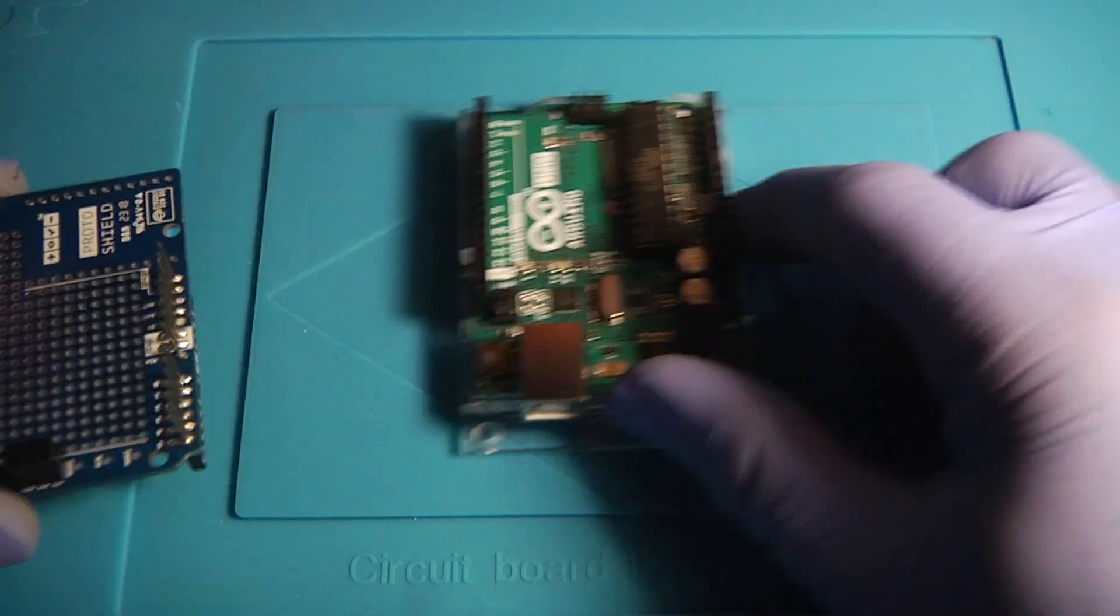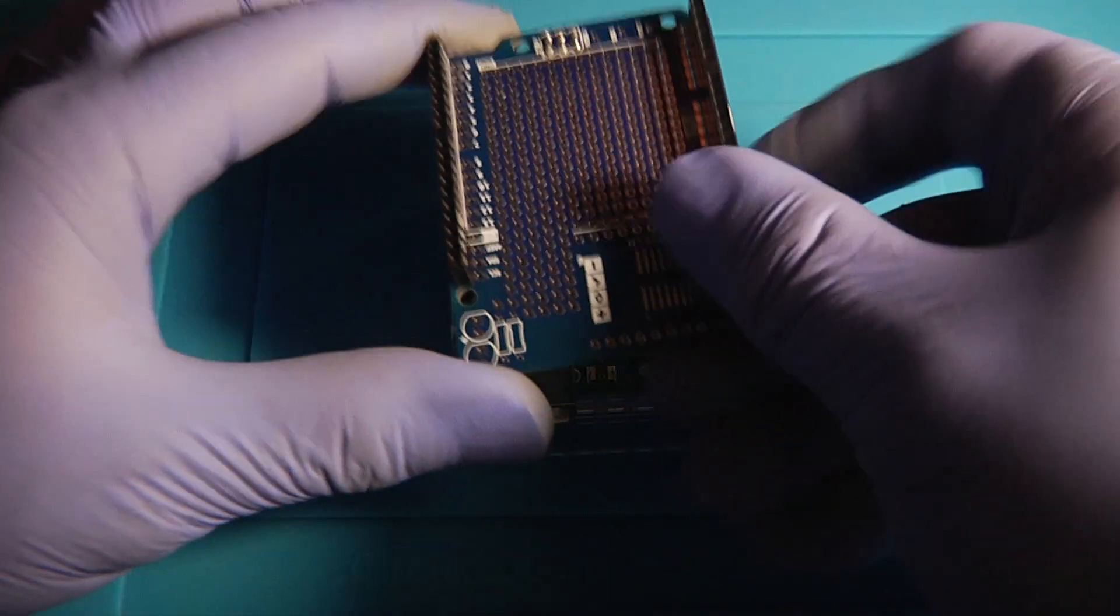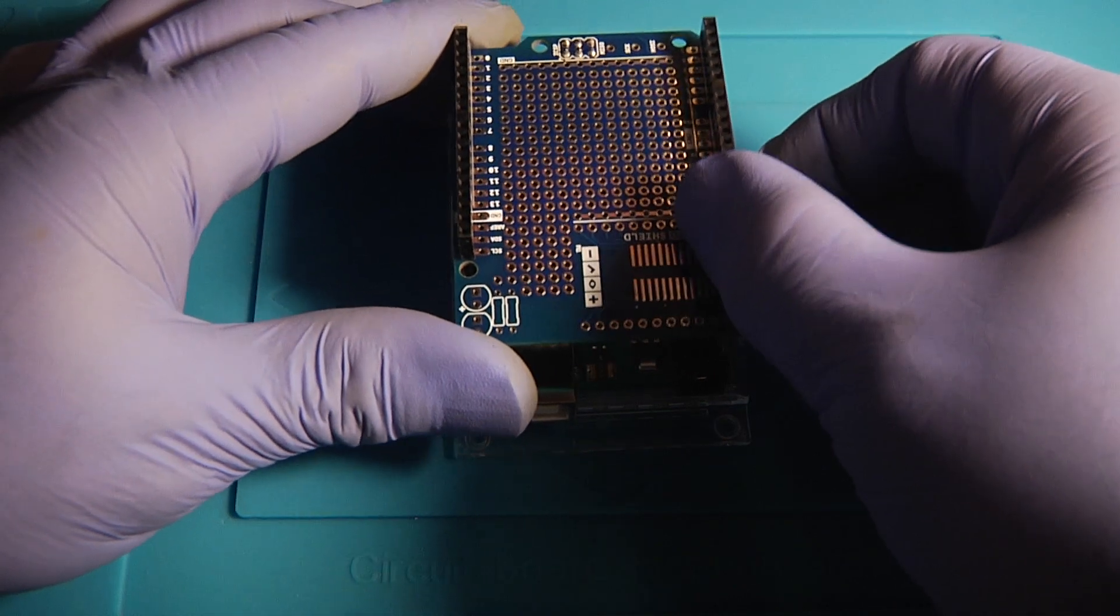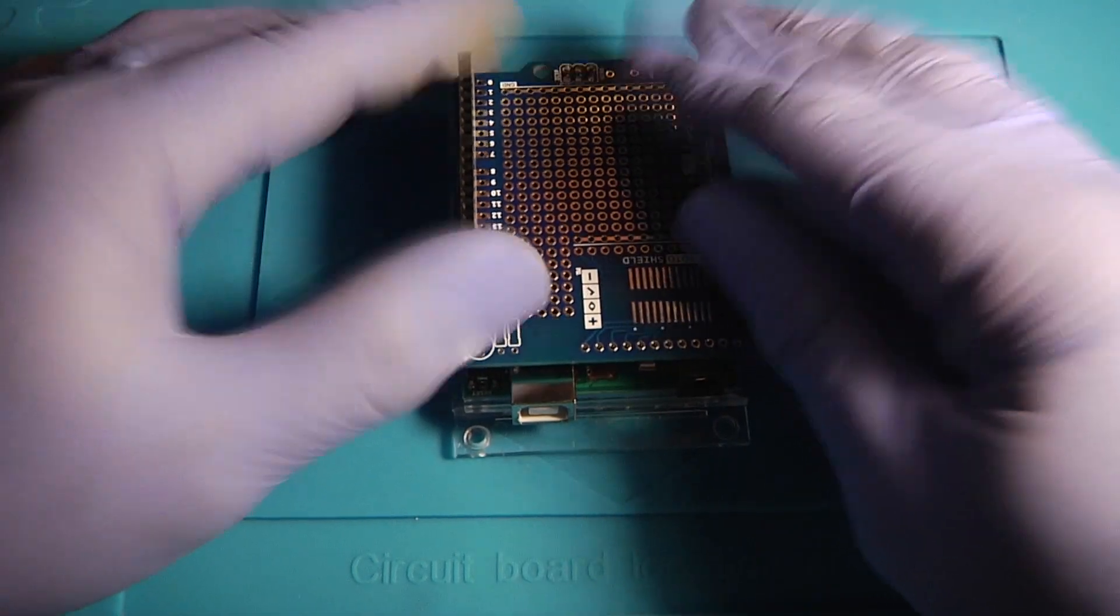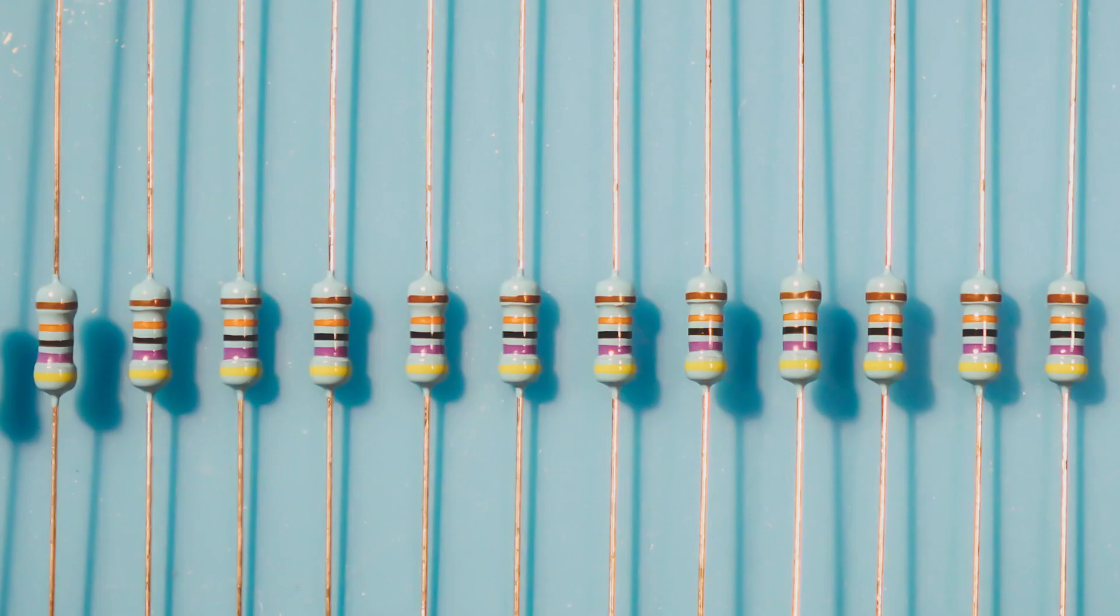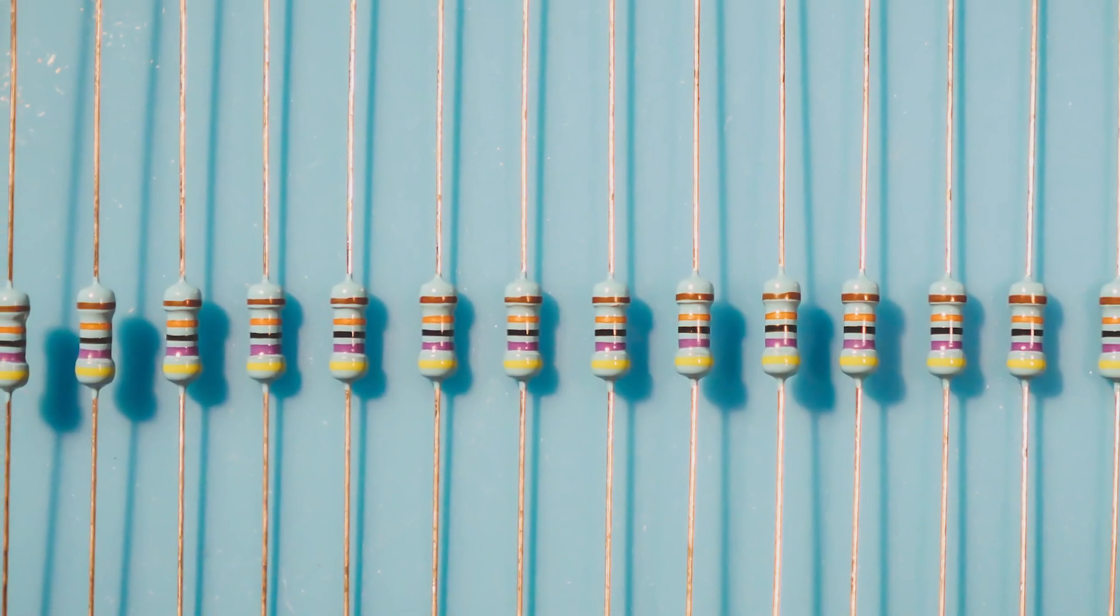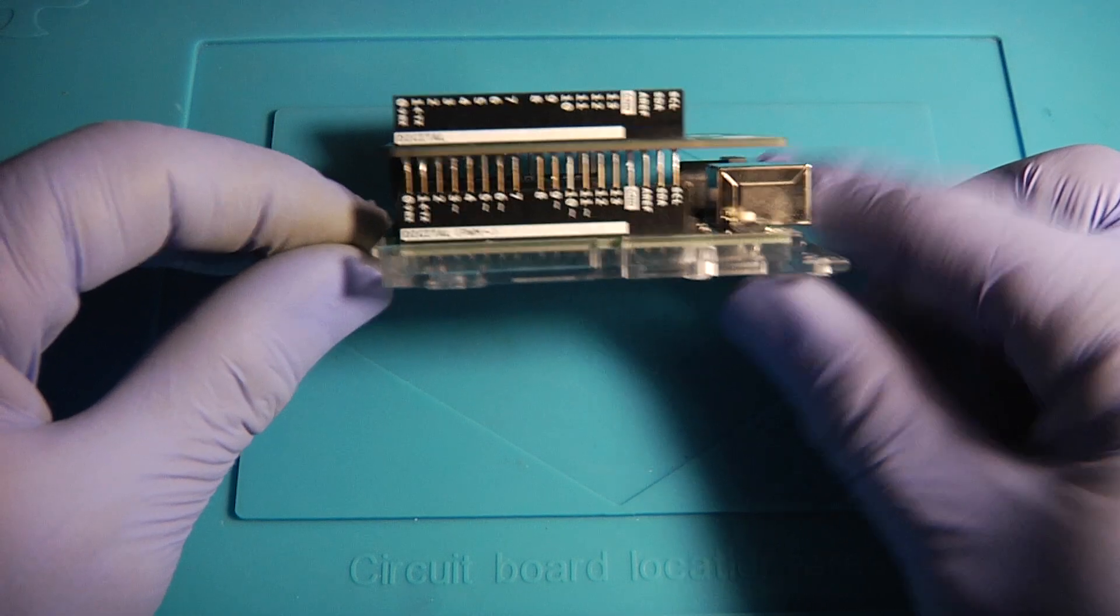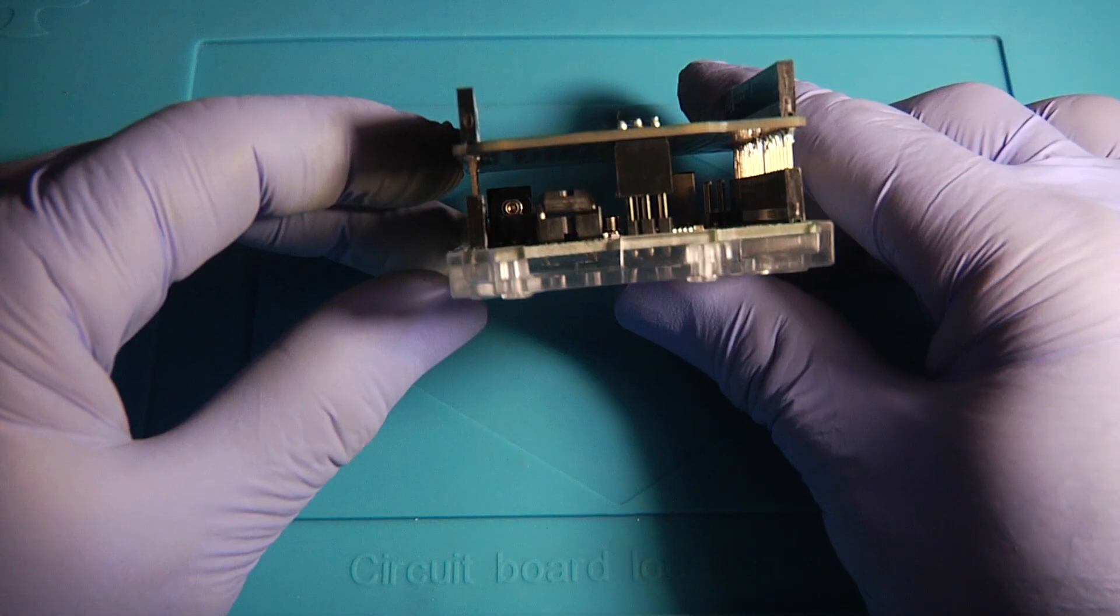Now you can place your proto shield on top of your Arduino Uno. And you're ready to start prototyping. You can add additional components to this shield if you like. You could also add shields on top of this shield. The possibilities are endless.